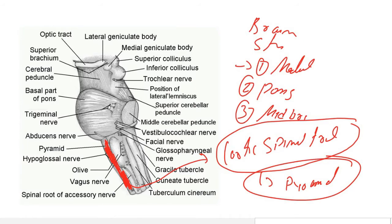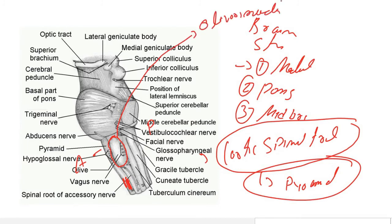Just posterior to the pyramid, on the lateral side, there is an elevation called the olive. This anterior side and posterior side orientation is important to note. The olive elevation is due to the olivary nucleus, which you will see in the internal section.